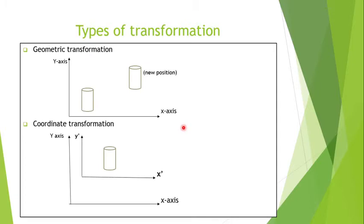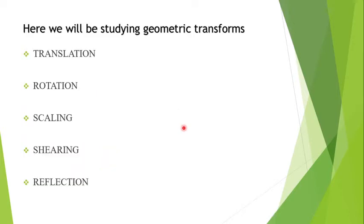There are basically two types of transformation: geometric transformation and coordinate transformation. In geometric transformation, the object is transformed while the coordinate system remains stationary. While in coordinate transformation, the object remains stationary and the coordinate system is transformed. Here, we will be restricting our discussion to geometric transformation only, which includes translation, rotation, scaling, shearing, and reflection.